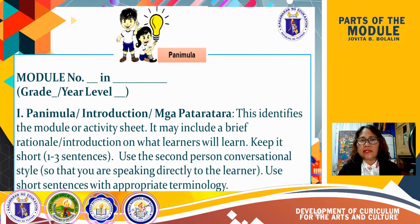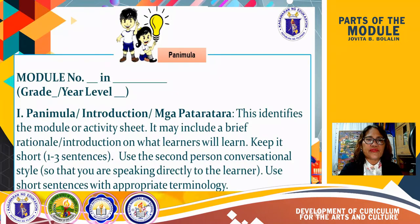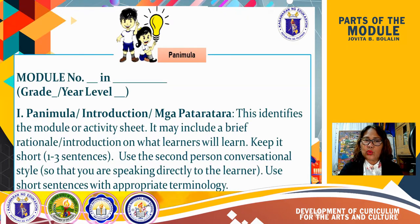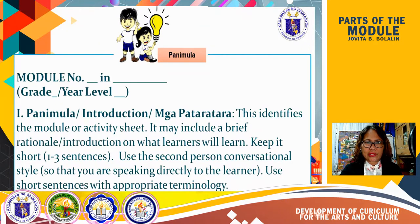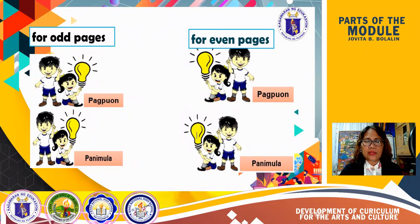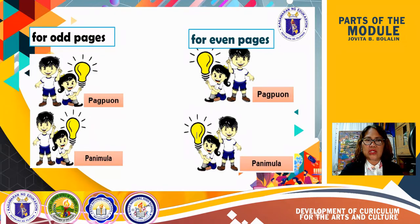For Part 1, introduction, this identifies the modular activity sheet. It may include a brief rationale or introduction on what learners will learn. You have to keep it short, about one to three sentences. Use the second person conversational style so that you are speaking directly to the learner. Use short sentences with appropriate terminology. Here are the suggested icons where you can place at the top of the page, whether it is an odd page or an even page.